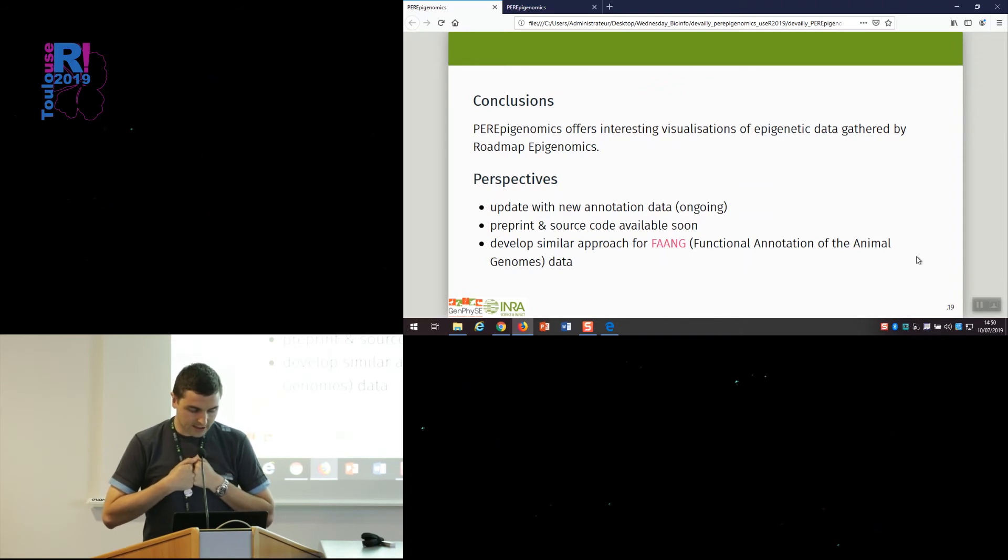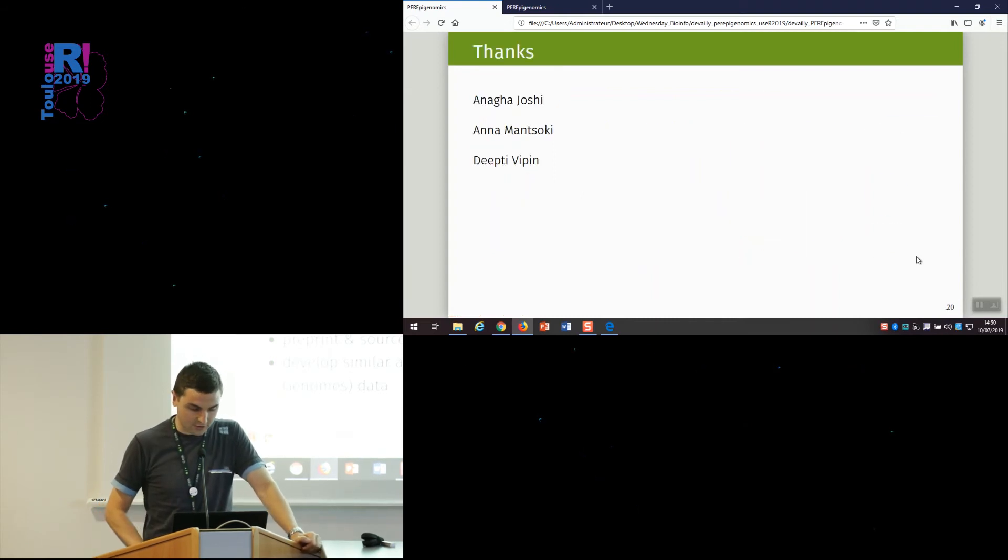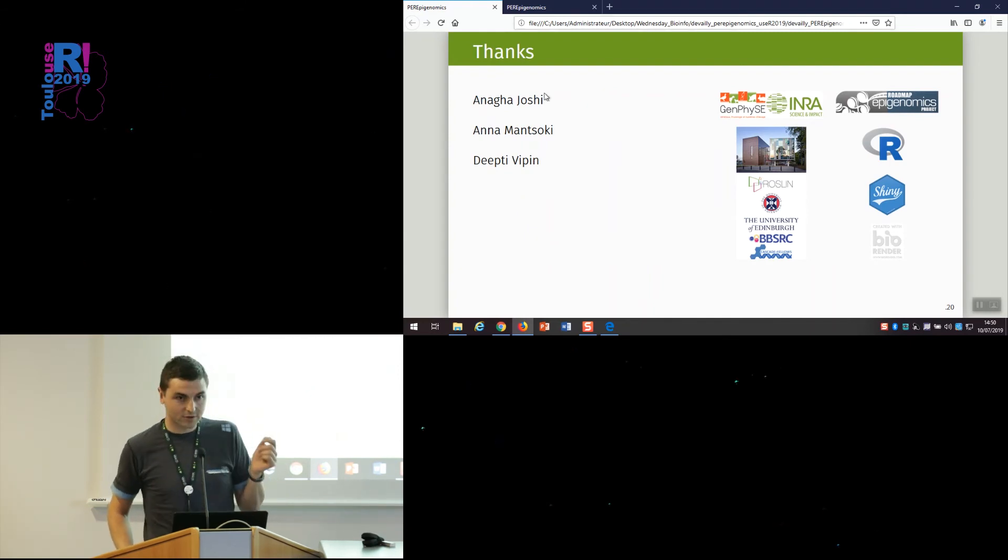We have generated summary tables. In conclusion, peripigenomics offers interesting visualizations of epigenetics data gathered by the roadmap epigenetics consortium. We are currently updating those plots using new annotation data from gene code. The preprint and source code should be available soon. We are planning to adopt similar approaches on the FAANG data for functional annotation of animal genomes, which aims at gathering epigenetic data for farm animal genomes. Thank you for your attention. I would like to thank all the people that have helped me during this work and all the institutional organizations that were critical for the realization of this work.